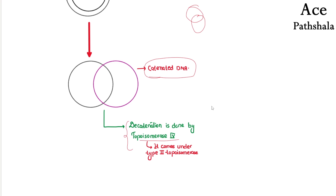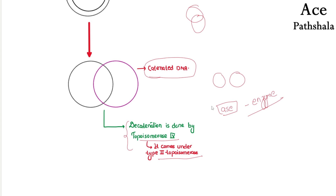Decatenation is performed by Topoisomerase IV enzyme. Topoisomerase IV is a Type II topoisomerase — there can be confusion here as we are talking about Topoisomerase 4, which is a type 2 topoisomerase.